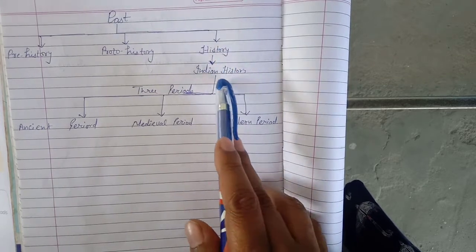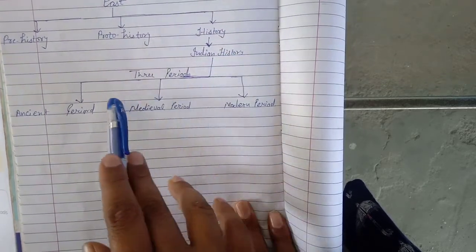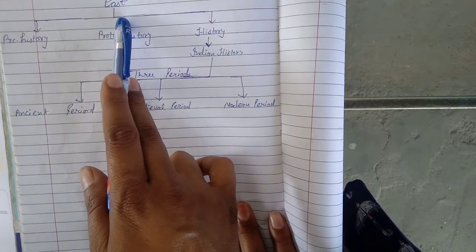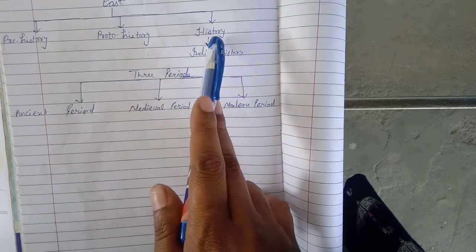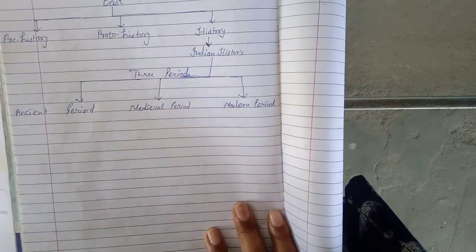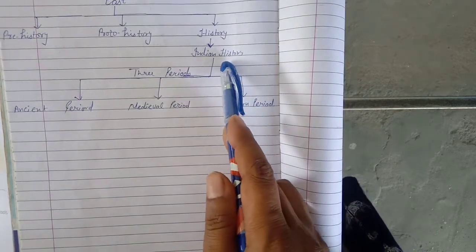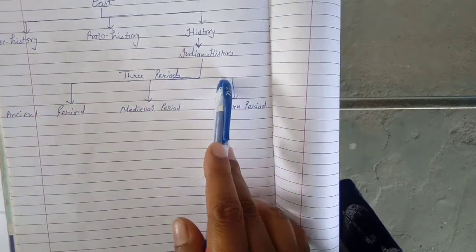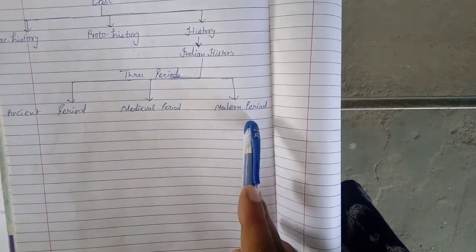Today, this is the second video of this chapter. We will learn that Indian history is divided into 3 periods: ancient period, medieval period, and modern period.